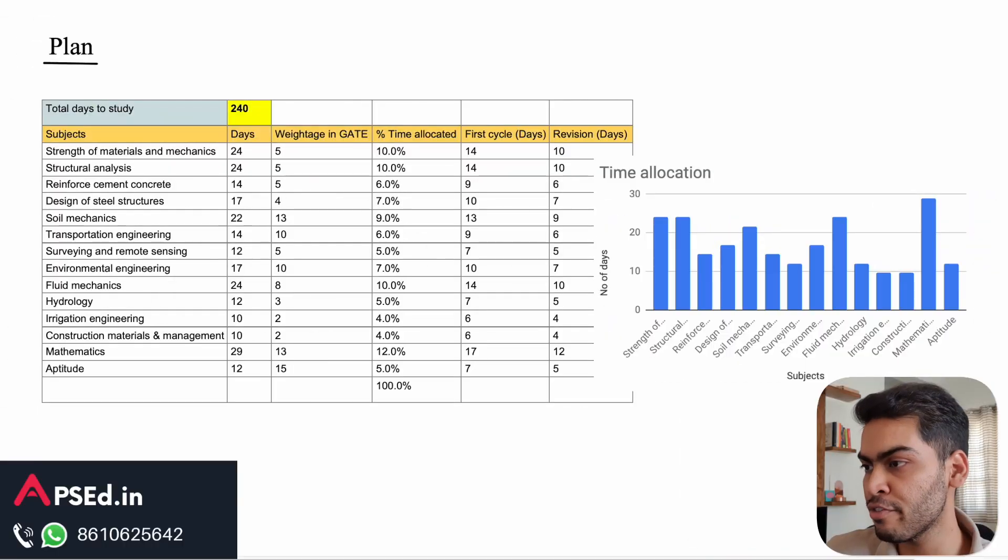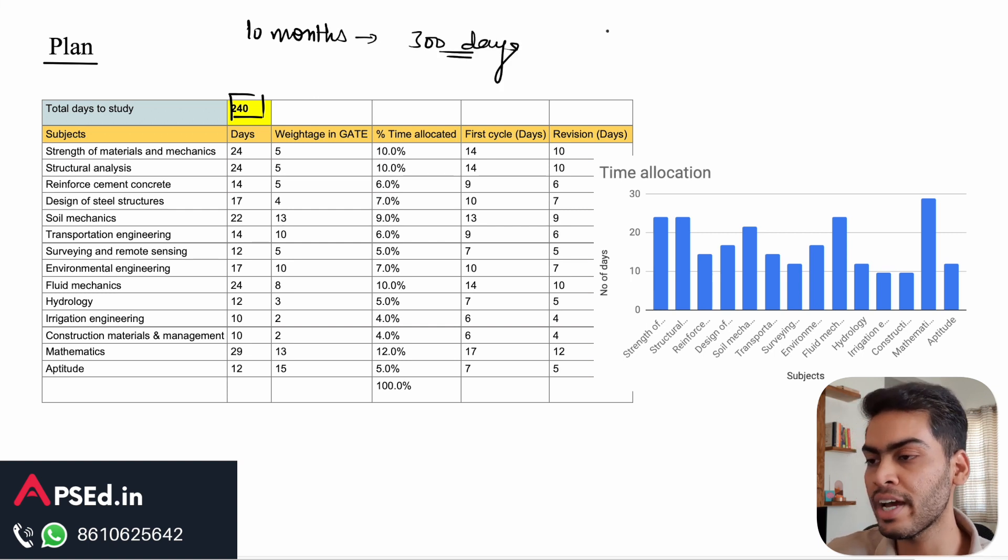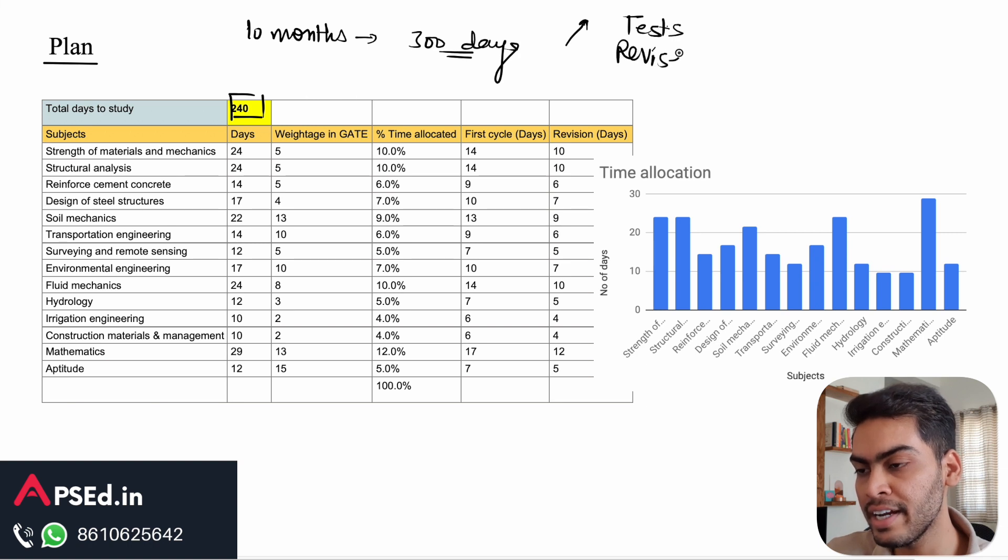I'll give you a detailed plan for GATE on how you can manage and plan your preparation. Here I have made a plan for 240 days. You have 10 months, around 300 days, but in at least the last one or two months you need to put a lot of effort on giving tests and revising the subjects that you have studied. That's why I've cut it down and given eight months here for your study and completing some basic revision also.